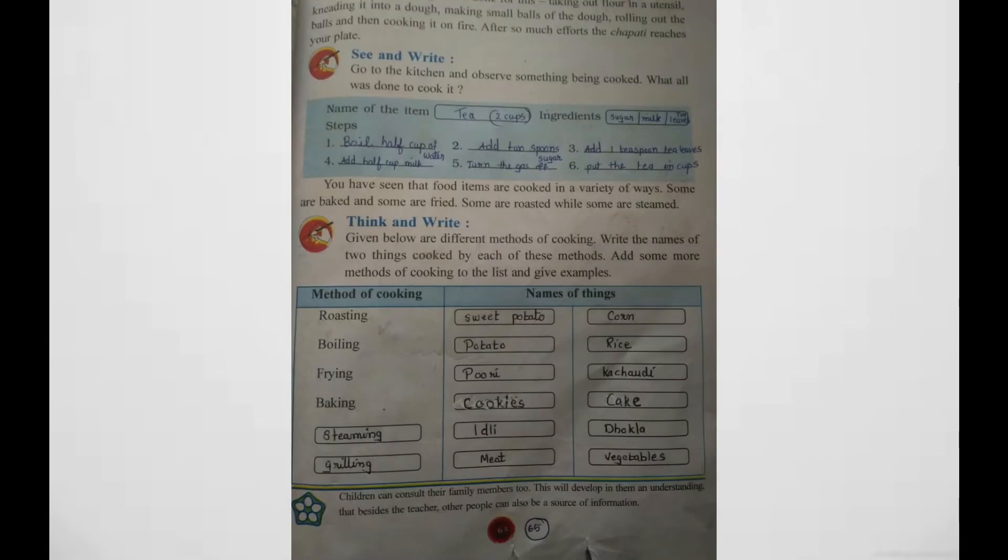Next one, page number 65. Here it is written: go to kitchen and observe something being cooked. What all was done to cook it? Name of the item. Today we are going to prepare tea. The item is tea. We are making two cups of tea.